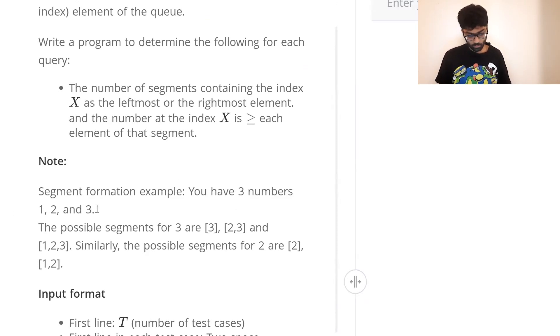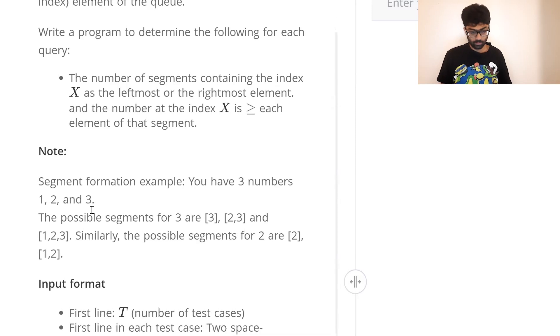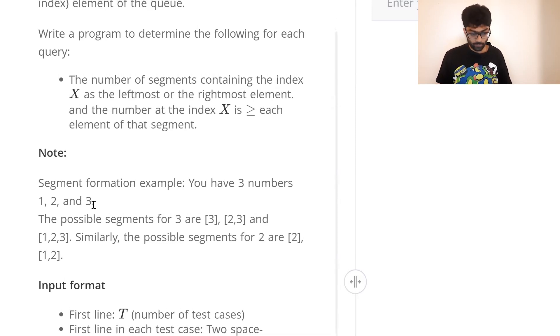If we have three numbers 1, 2 and 3. If our input is 3 then we can see the number of possible segments are 3 itself, 3, 2 and 3.